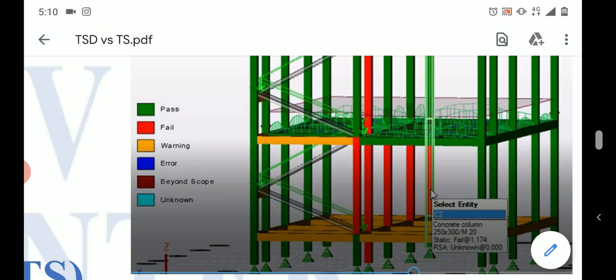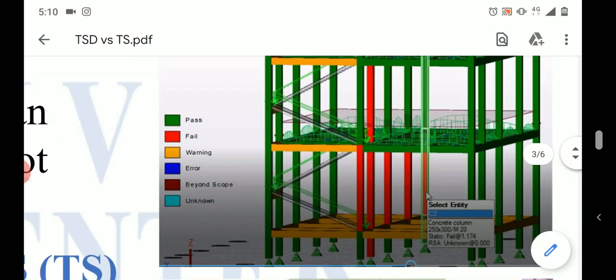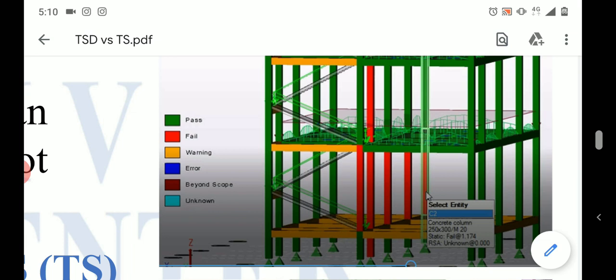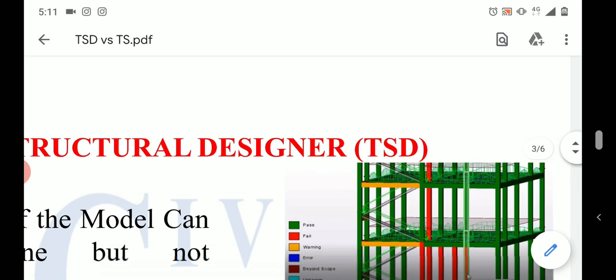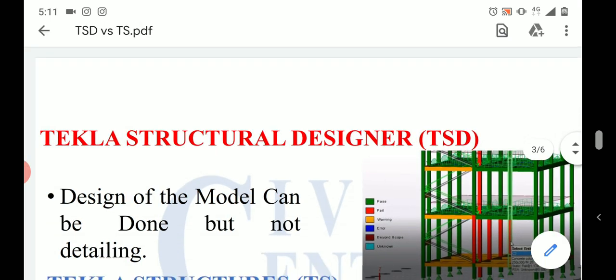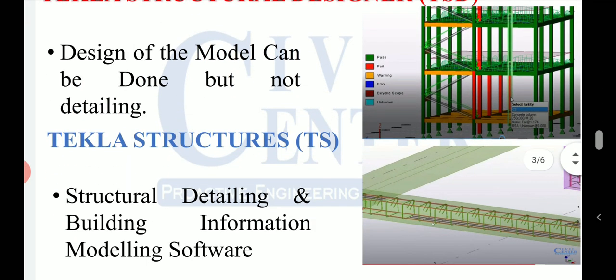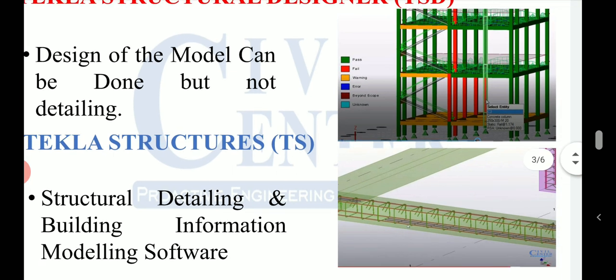You can also see the loads applied — live loads, dead loads, and staircase loads. After the application of these loads, the software tells you the required size of structural members: the size of columns, beams, and slabs, and what type of reinforcement to use — for example, how many 16mm reinforcement bars in columns and at what spacing the ties will be placed. These are the outputs you get from Tekla Structural Designer as a design software.